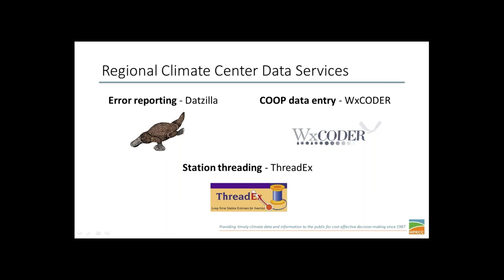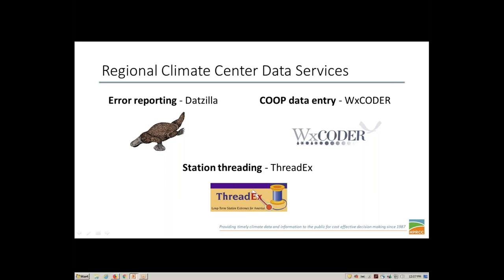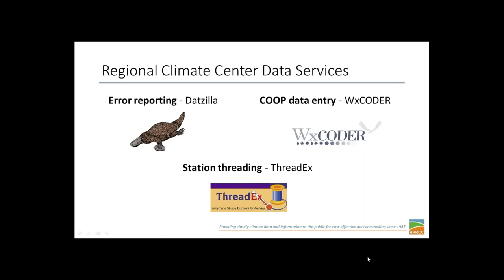For instance, if you work with co-op data, you've interacted with the Western Regional Climate Center — all the co-op data entry is run through what's called Weather Coder, managed by their center. Or if you've ever run into errors in the co-op data and want to get that corrected, there's an error reporting system called Datzilla run through the Southern Regional Climate Center. The Northeast Regional Climate Center helps put together the threaded products in interfaces such as XMASIS or STASIS.